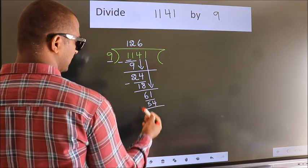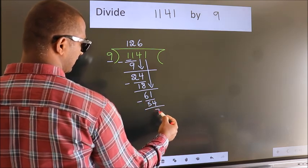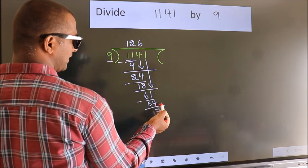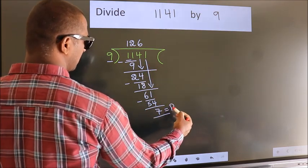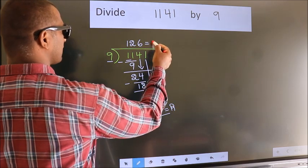Now we subtract. We get 7. No more numbers to bring down, so we stop here. This is our remainder. This is our quotient.